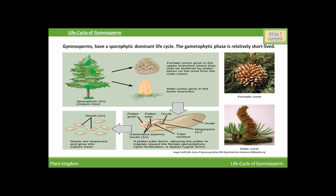The remaining one megaspore undergoes mitosis to form the female gametophyte. At this stage, the ovule is ready to be fertilized. The female cone contains megasporangia into which megaspores develop, and the male cone contains several microsporangia into which pollen grains are developed.